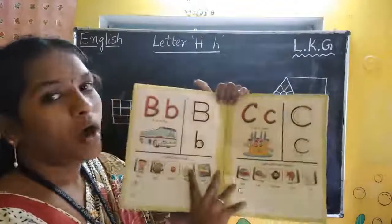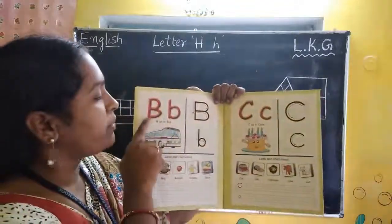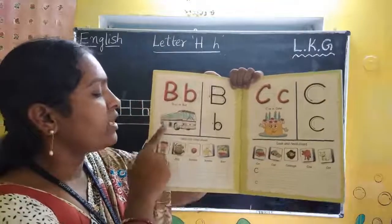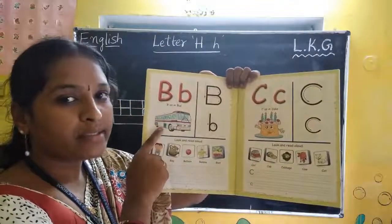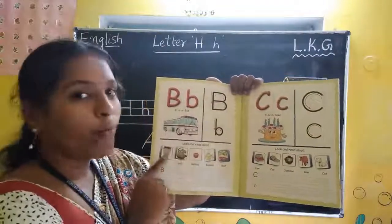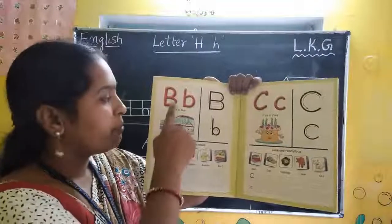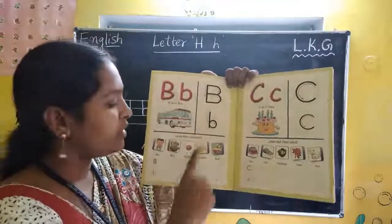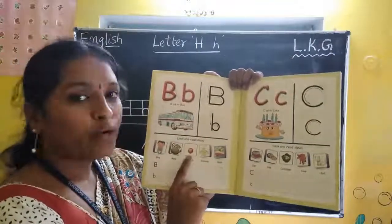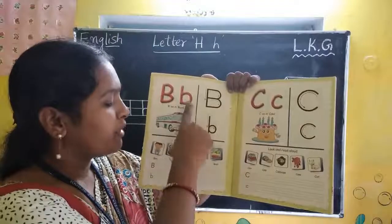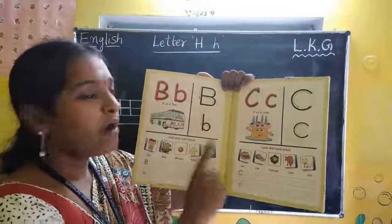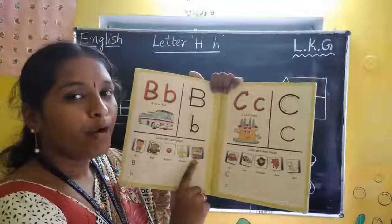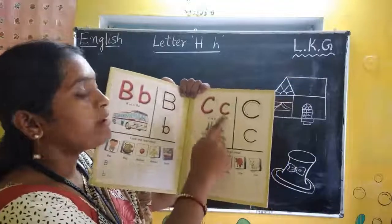Now capital B, small B. B for bus, B for boy, B for bag, B for balloon, B for banana, B for boat.